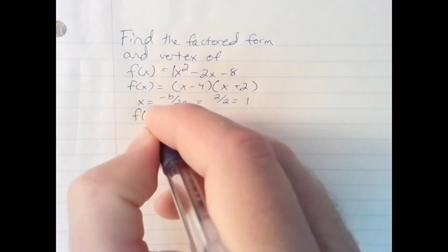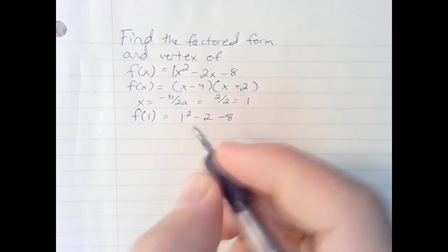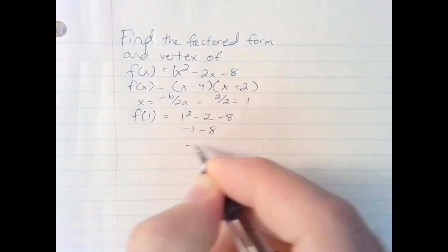Let's plug that back into the original function to find the y-coordinate. 1 squared is 1, 1 minus 2 is negative 1, negative 1 minus 8, negative 9.